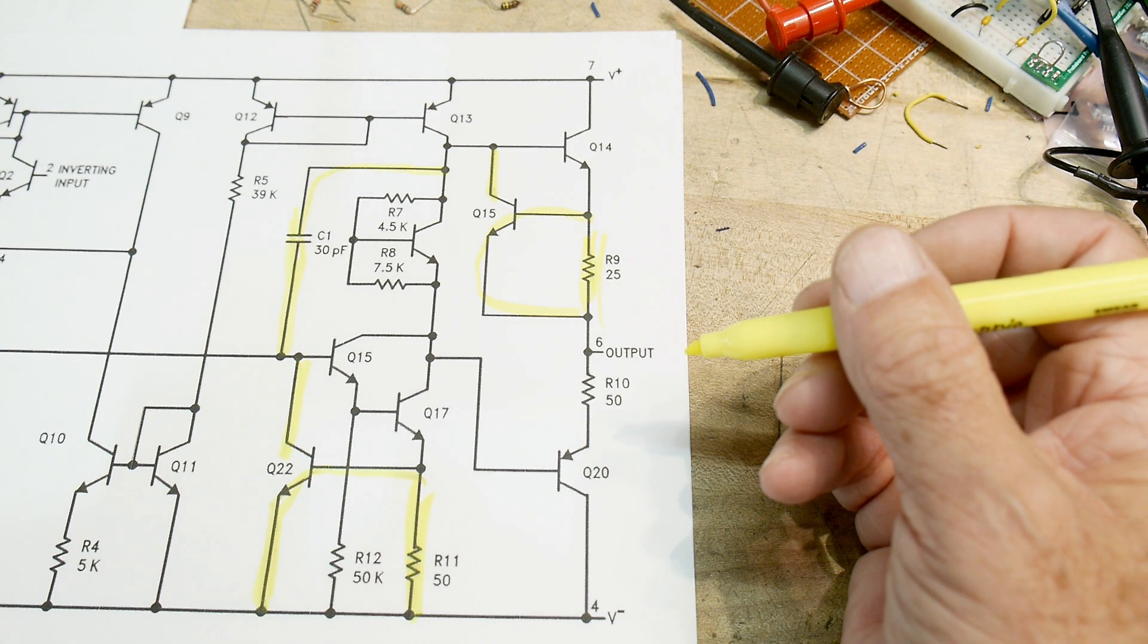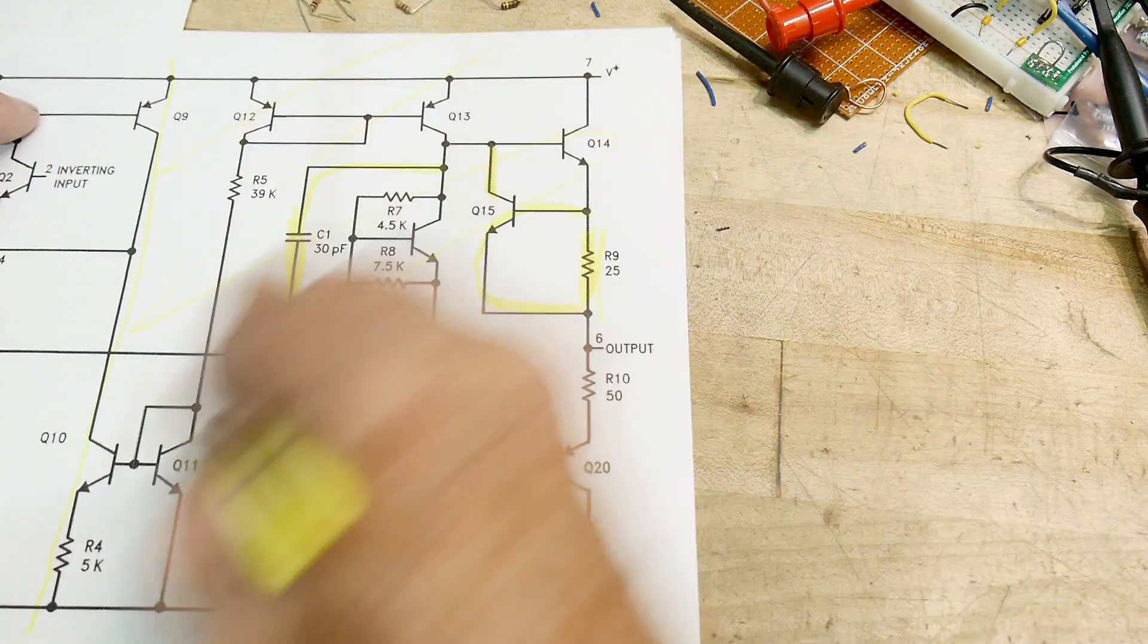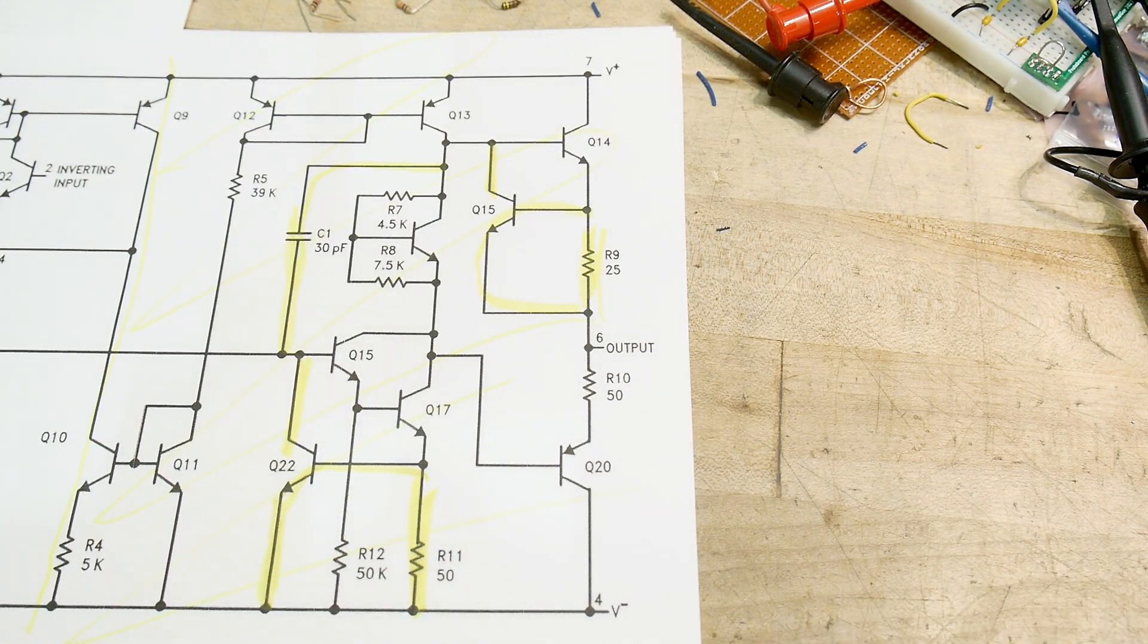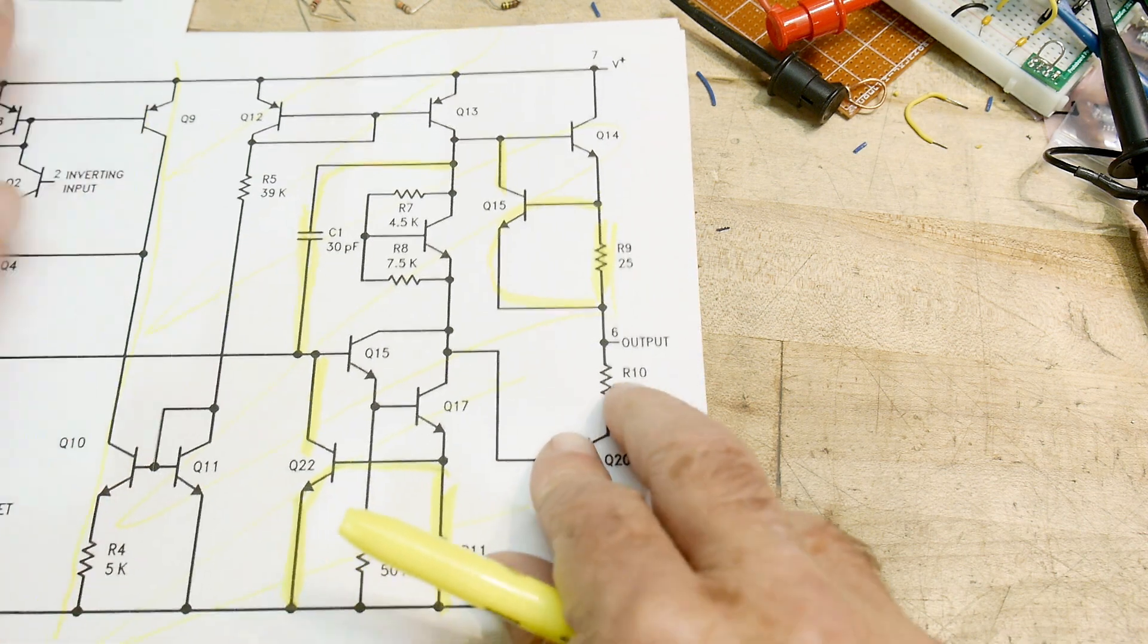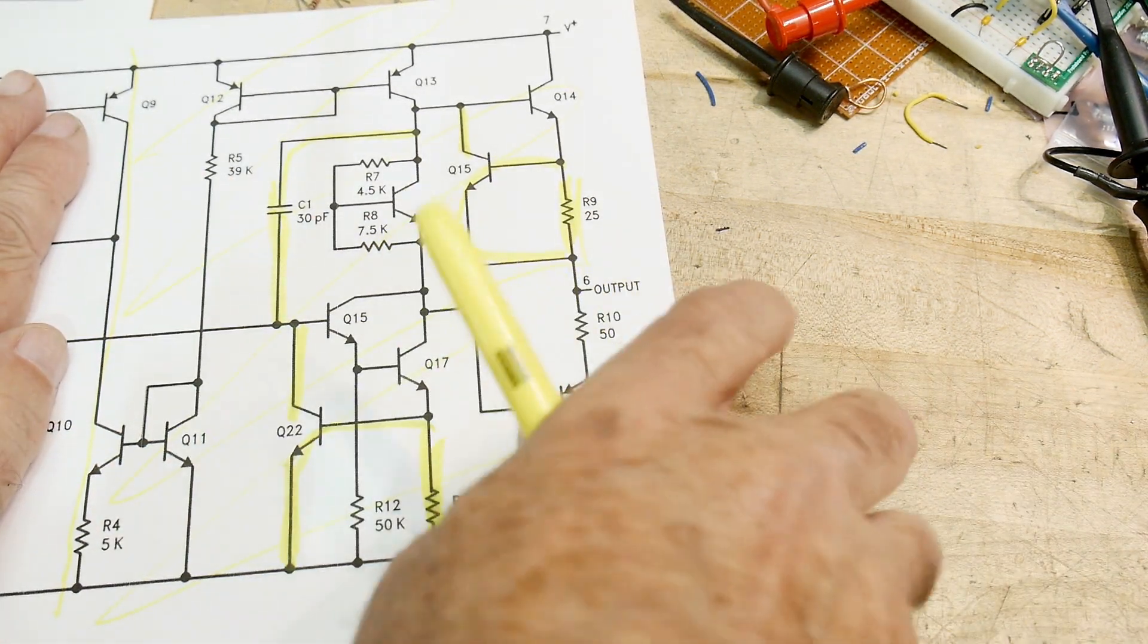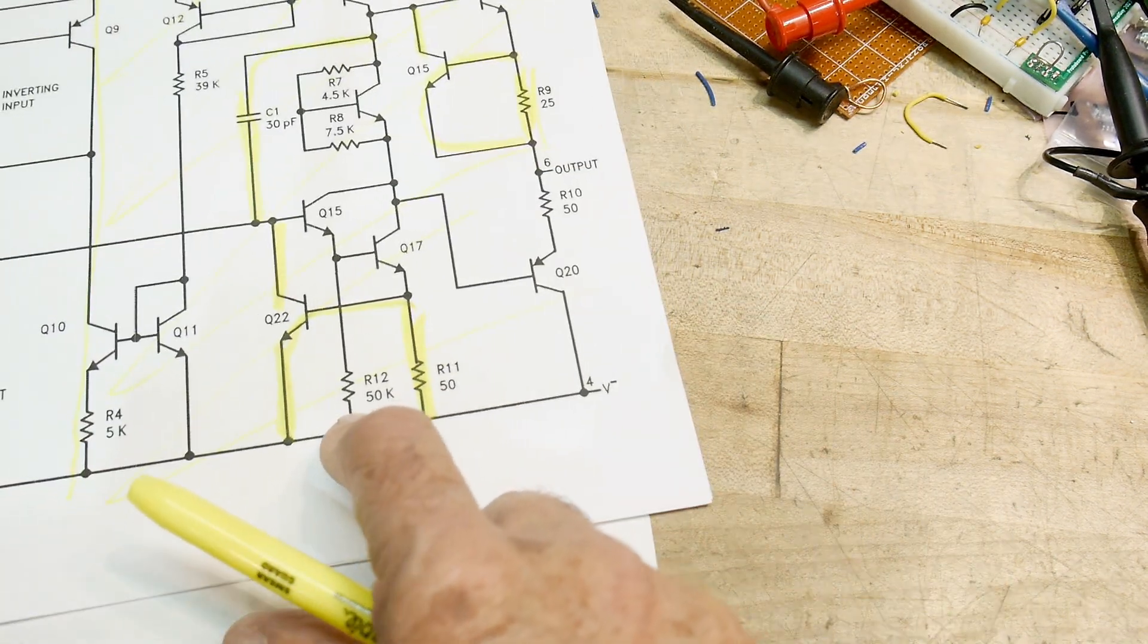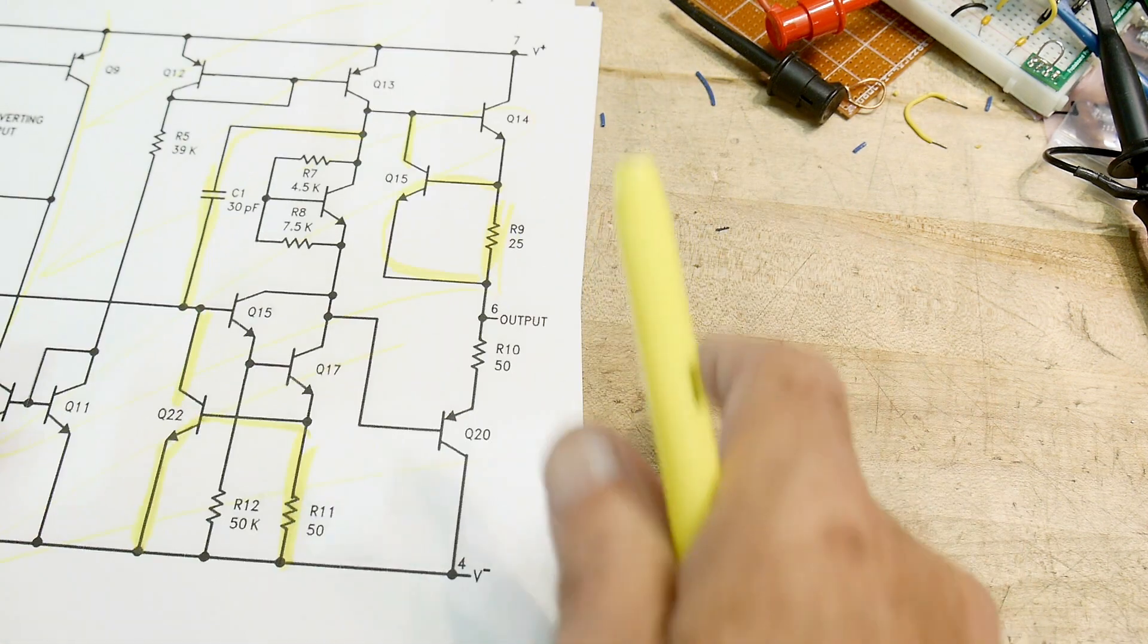So I think we basically have described this part of the circuit, okay? That half of the thing we understand now. So now we have to understand the input. And I'll be perfectly frank, I don't really understand the input quite yet.